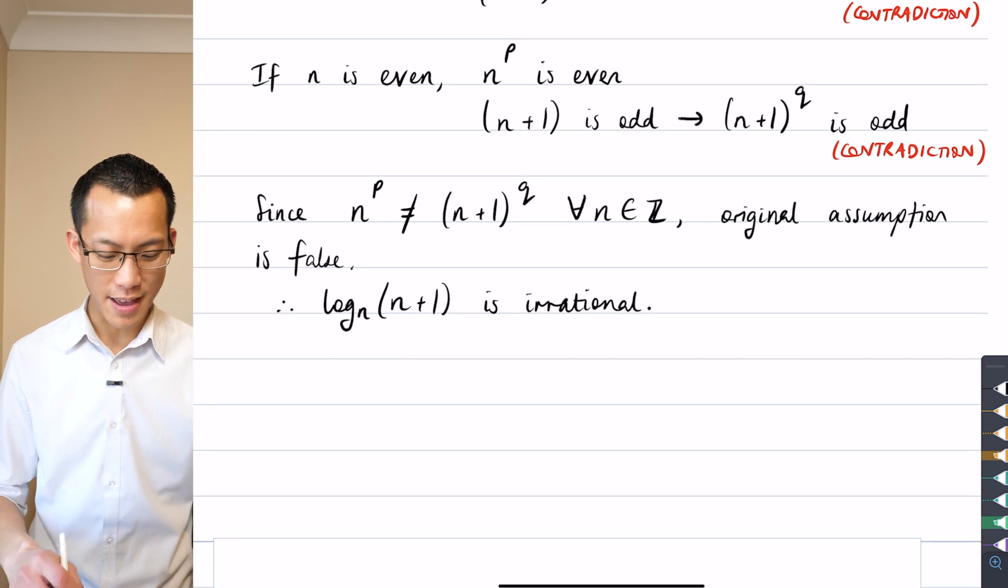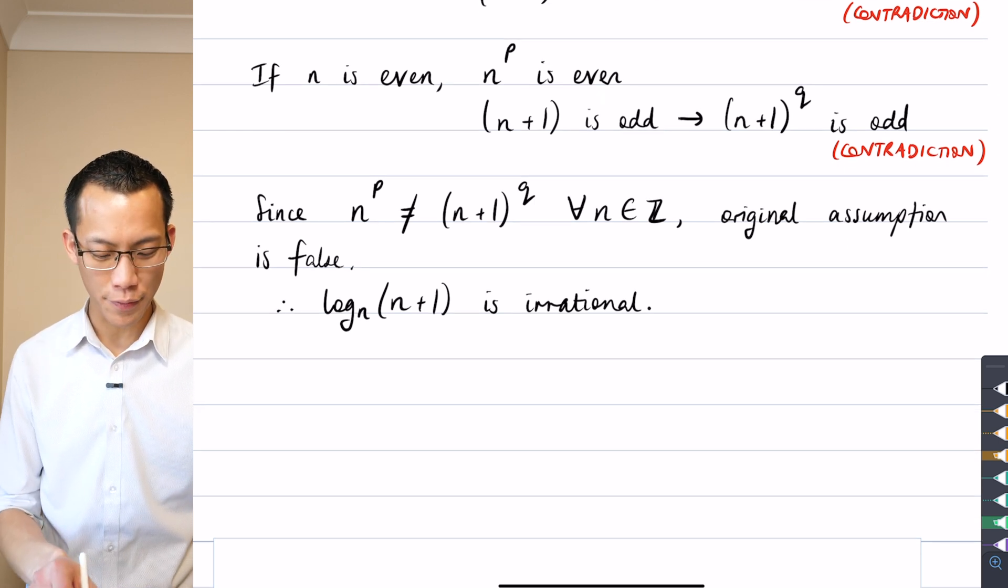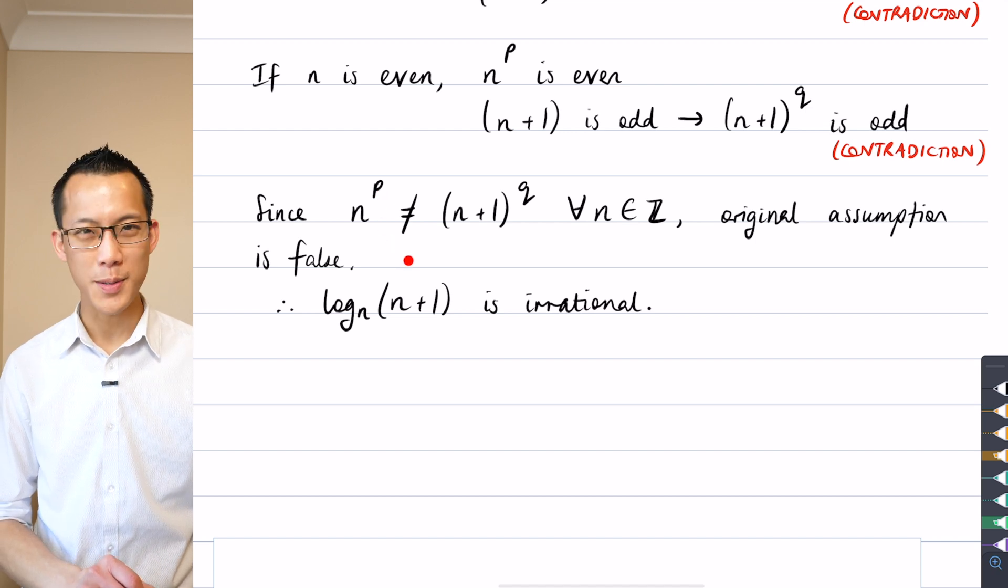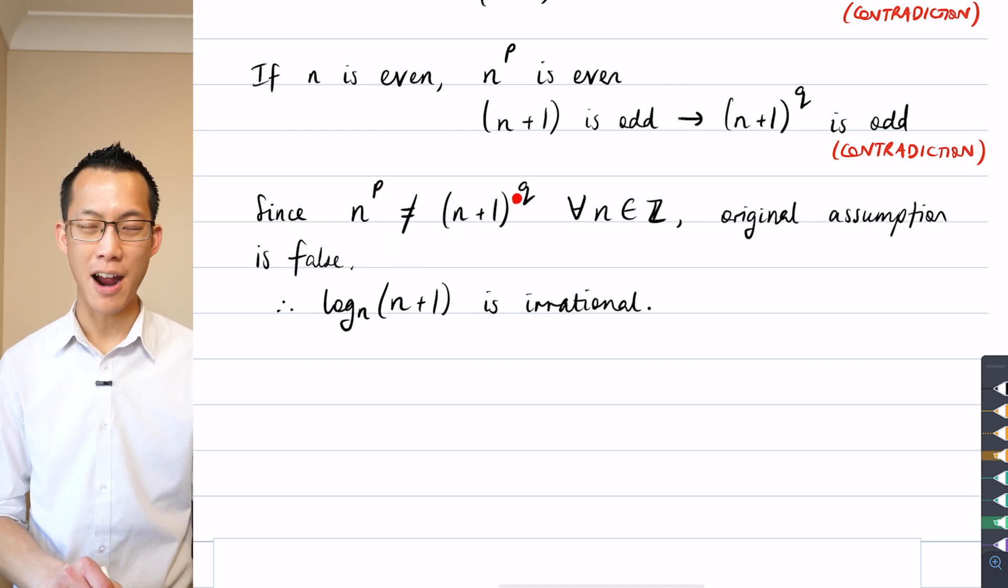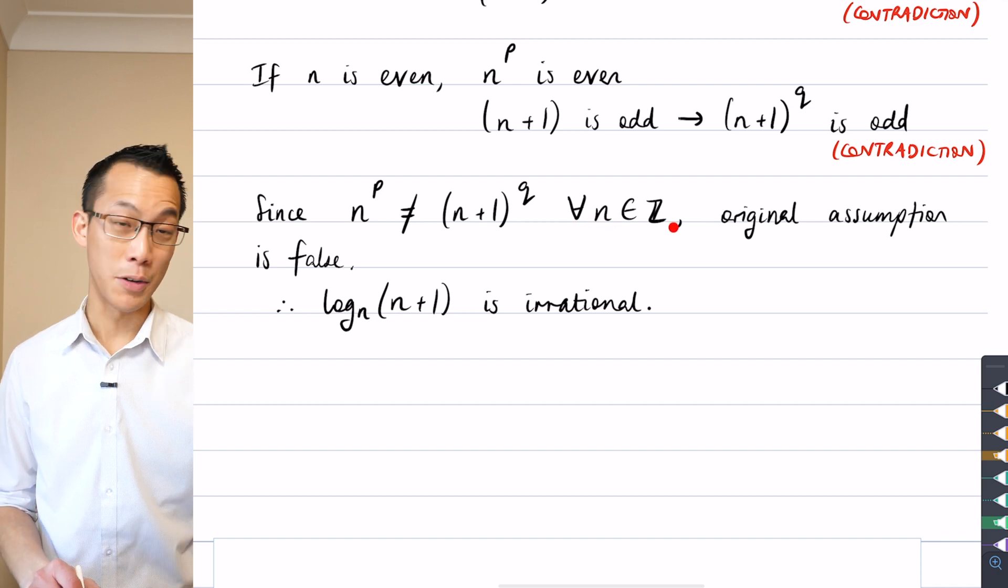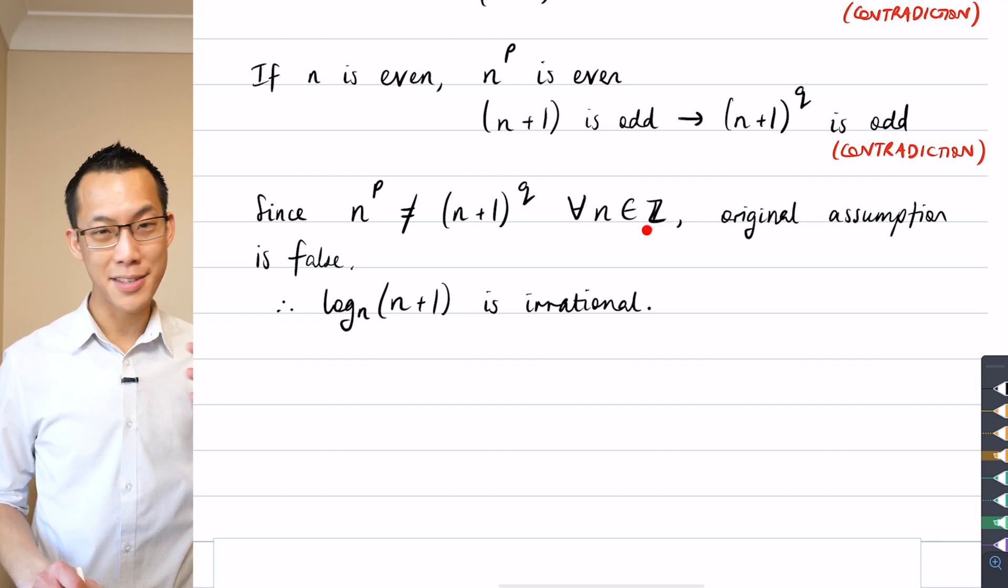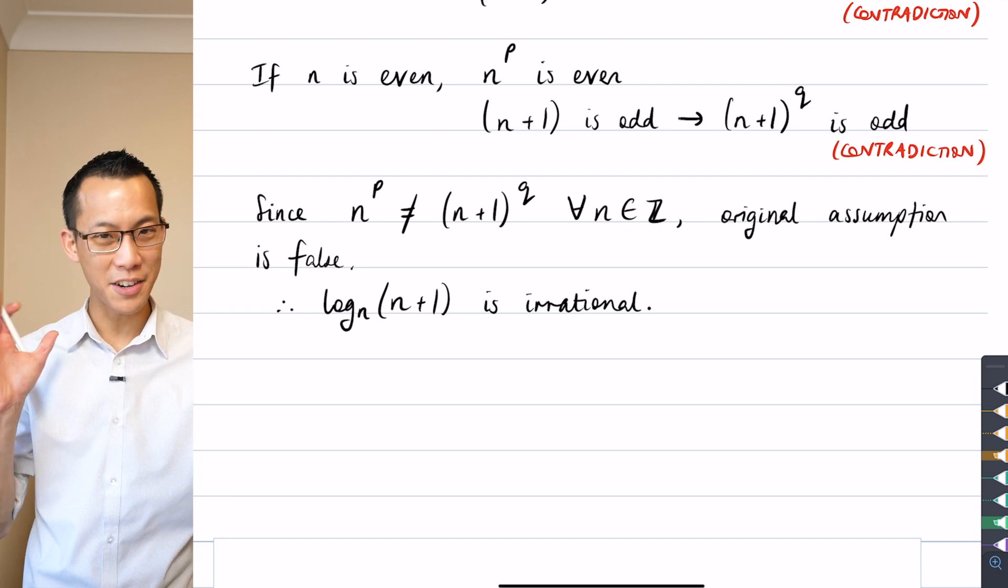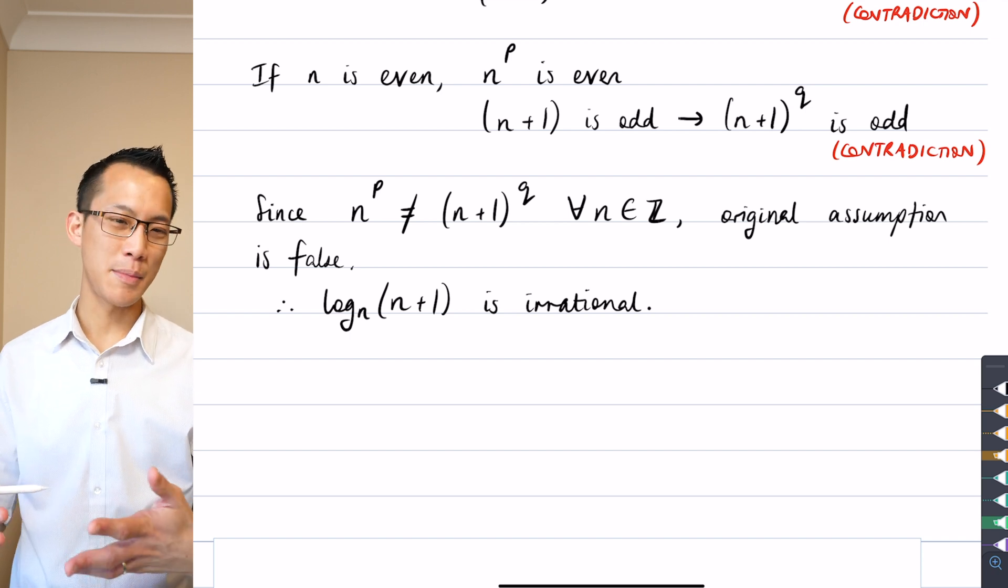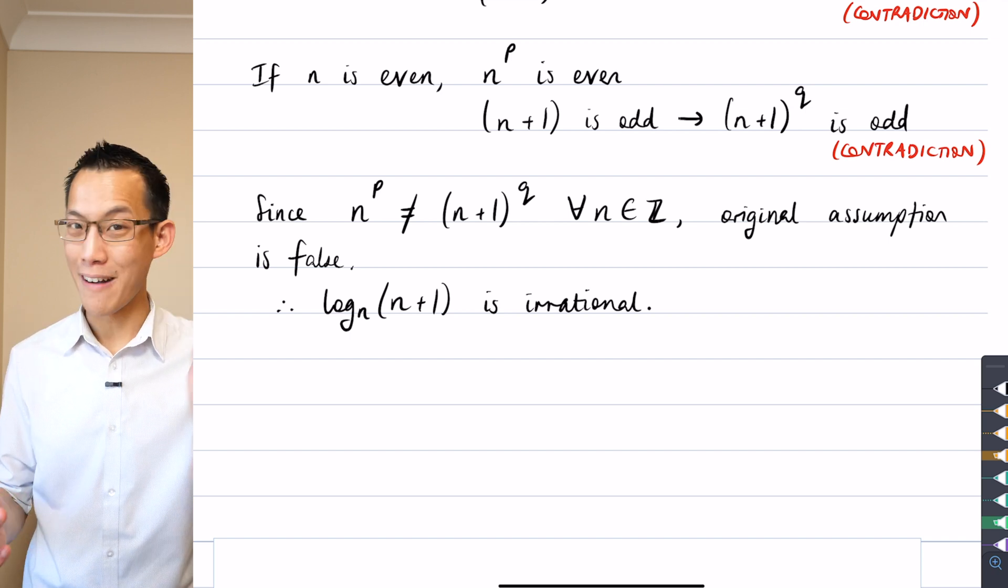So therefore, it's a bit notation heavy, but hopefully you can read this with me. n to the power of p cannot possibly be equal to (n+1) to the power of q for every value, for all the values of n that are integers. And so since that can't work, right? We've landed on these contradictions, that original assumption, which set this all in motion has to be false. Therefore, it's not rational. It's irrational.